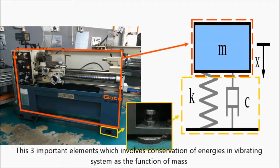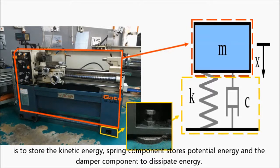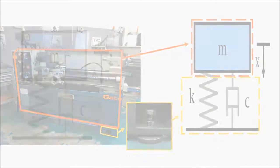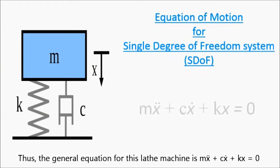These three important elements involve conservation of energies in a vibrating system. The function of mass is to store kinetic energy, the spring component stores potential energy, and the damper component dissipates energy. The general equation for this lathe machine is: M·x double dot plus C·x dot plus K·x equals zero.